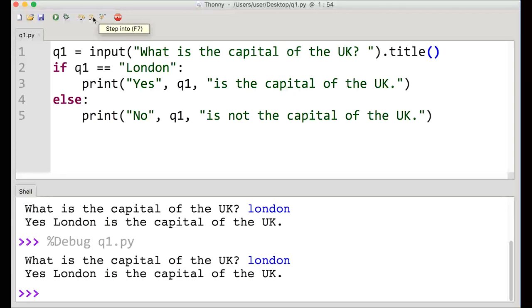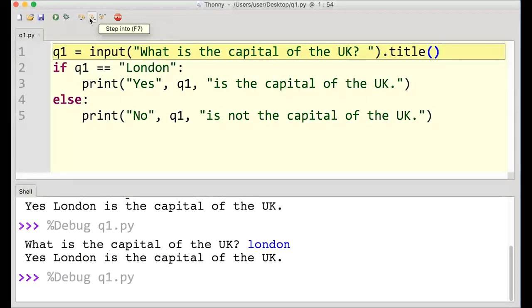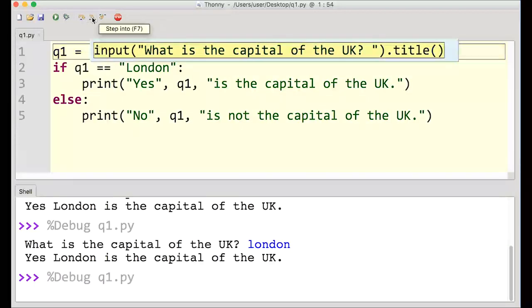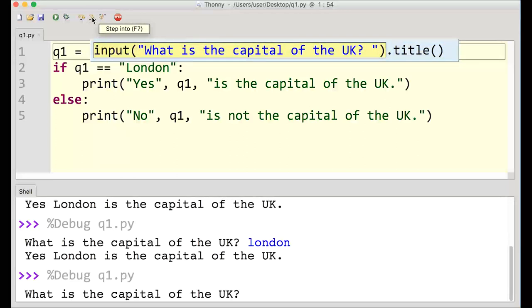So let's see if we put the wrong answer in, let's see what happens there. So just one more, go with the debug, and we'll step into this. What's the capital of the UK? And I'm going to put something silly, like I'm going to write Paris.